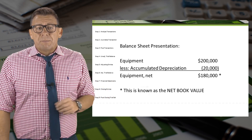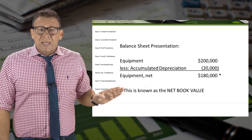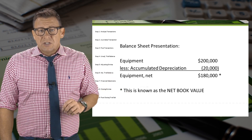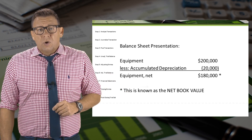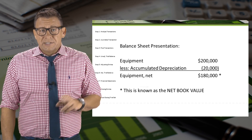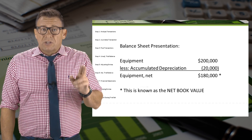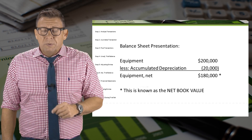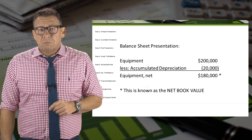Finally, let's look at the balance sheet presentation for equipment. Notice that accumulated depreciation is deducted from the equipment cost to arrive at a net amount — we call that net book value. The calculation is cost minus accumulated depreciation equals net book value.